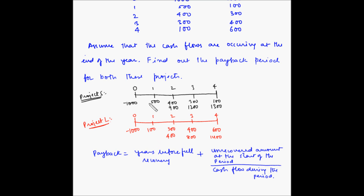Now let's take the case of project S. At the end of the second year we have recovered 900 rupees, but we want to recover 1000 rupees, and at the end of the third year we have recovered 1200 rupees. So we will be able to recover 1000 rupees in the third year. Years before full recovery is 2, plus the unrecovered amount at the start of the period: 1000 minus 900 equals 100, divided by cash flow during the third year, which is 300 rupees.